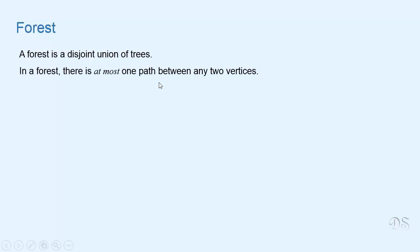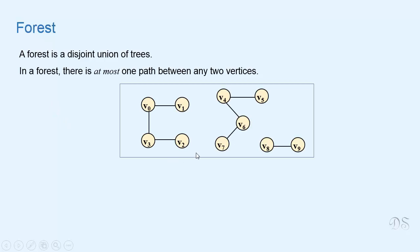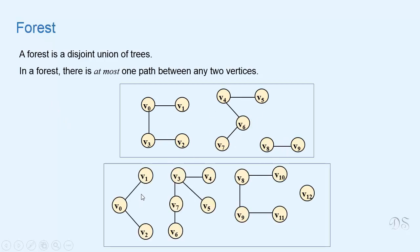A forest is a disjoint union of trees. In a forest there is at most one path between any two vertices — meaning there is either no path or one path between any two vertices. In this forest we have these 3 trees. In this forest we have these 4 trees.